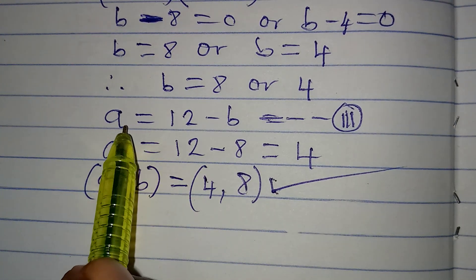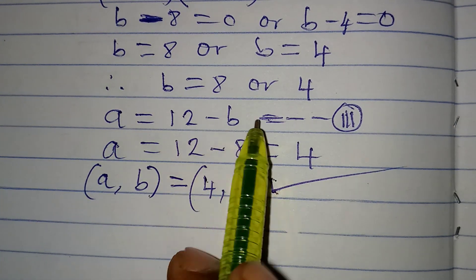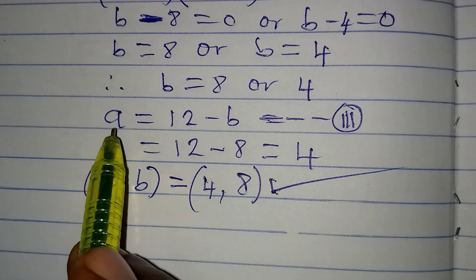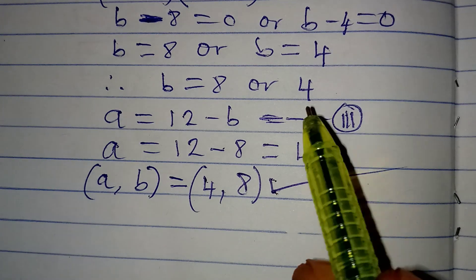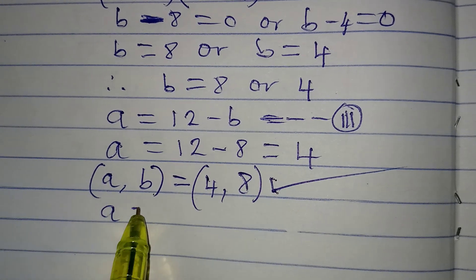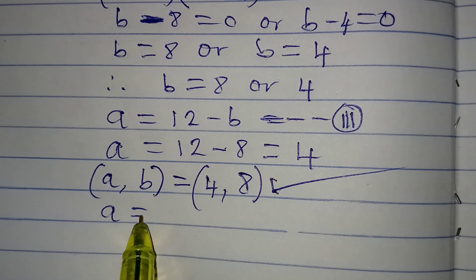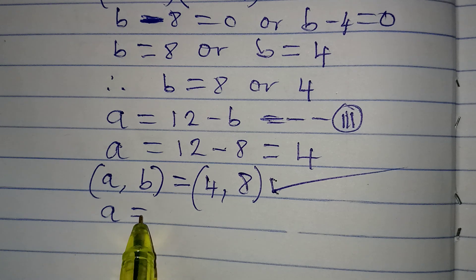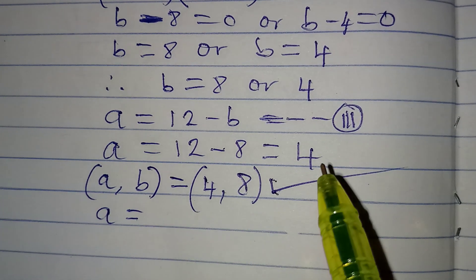Remember the equation is A equal to 12 minus B. Now, if we are looking for A at this point, B is equal to 4.